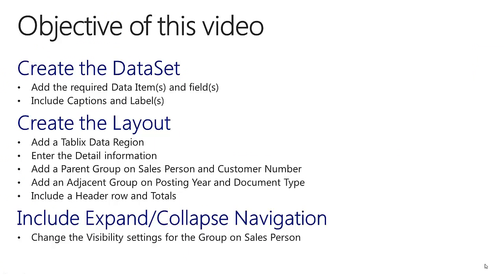We have now created the report. To summarize, we created the report in three easy steps. We started by creating the dataset and adding the required data items, fields, captions and labels. Next we went into Visual Studio and used a TableX data region — entered the detail information, parent-child groups and adjacent groups on posting year, document type, salesperson and customer number. Then we included a header row and totals. We enhanced the report by changing the font and adding some colors. And last but not least we included expand-collapse navigation by using the visibility settings, toggle item and hidden property on the salesperson fields.